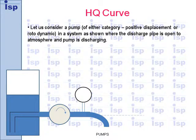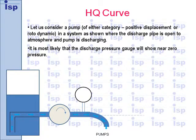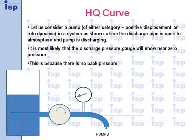Let us consider a pump of either category — positive displacement or rotodynamic — in a system where the discharge pipe is open to atmosphere and the pump is discharging. It is most likely that the discharge pressure gauge will show near zero pressure. This is because there is no back pressure.